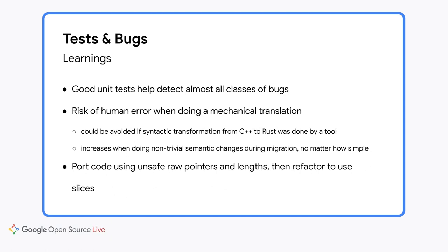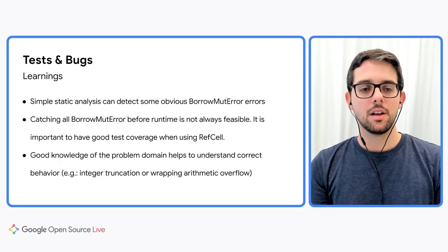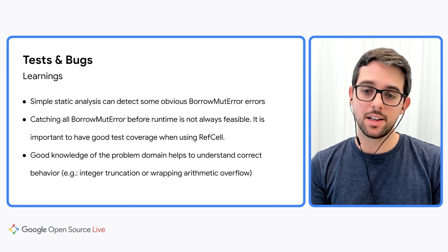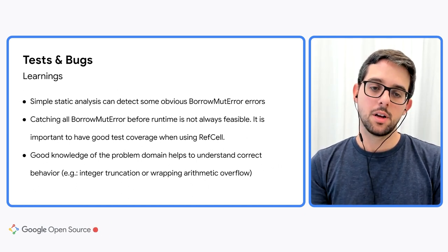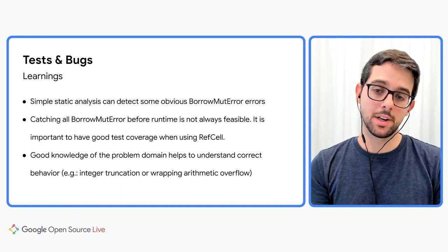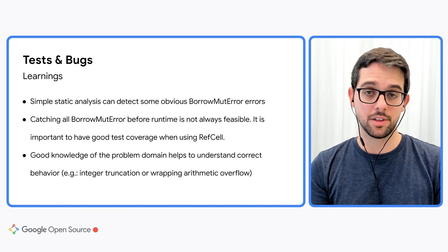The third learning is: port code using unsafe raw pointers and length, then refactor to use slices. Or as an alternative, refactor the C++ code to use std::span before migrating it to Rust. The fourth learning is that simple static analysis can detect some obvious borrow-mut errors. Nonetheless, catching all borrow-mut errors before runtime is not always feasible, so it's important to have good test coverage when using RefCell.